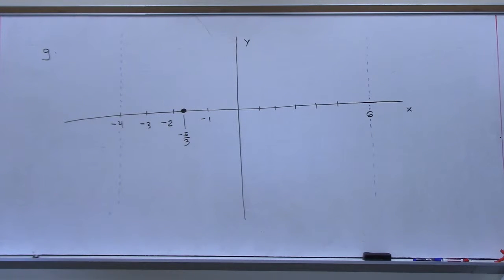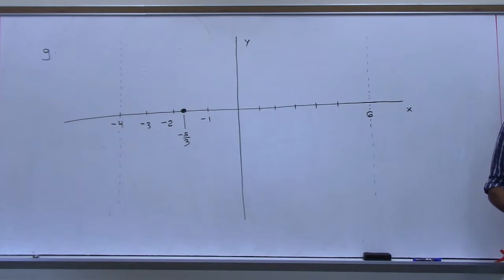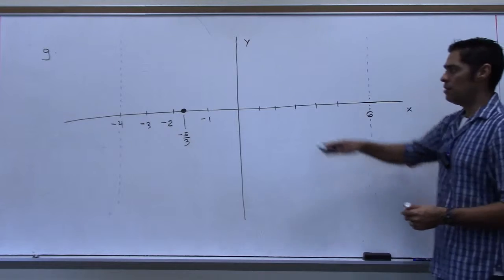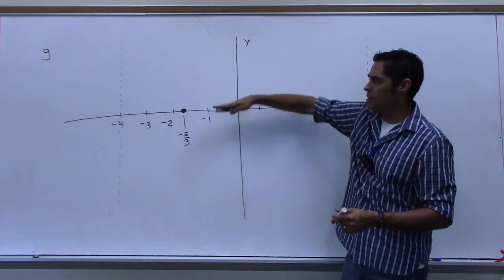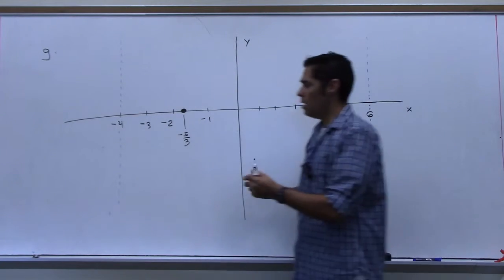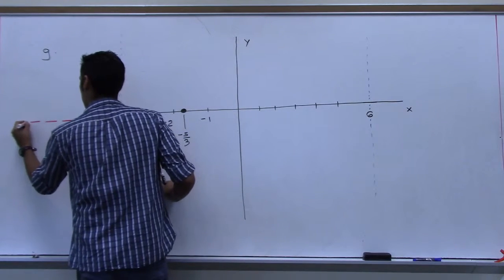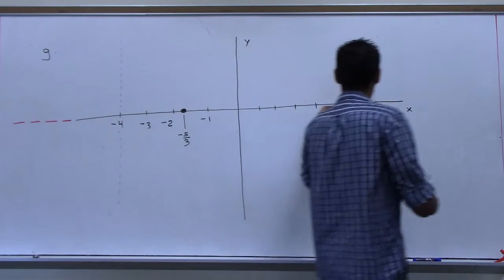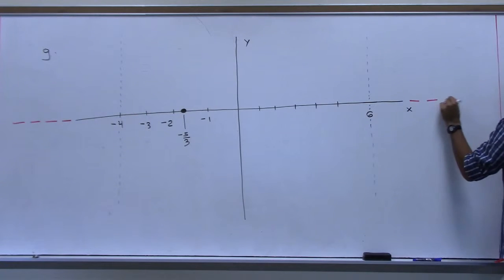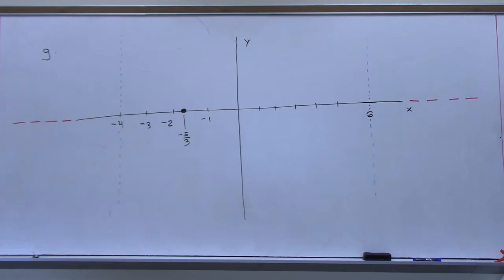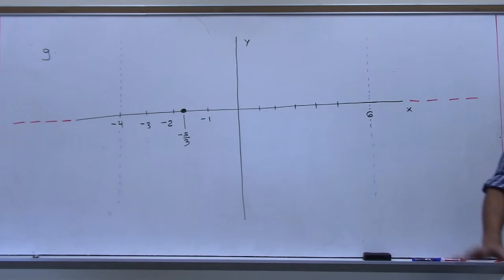The next piece of information was the horizontal asymptote at y equals zero — that's the x-axis — and it's only at the ends. So I mark it at the far left end and the far right end only. That's all the information I had.